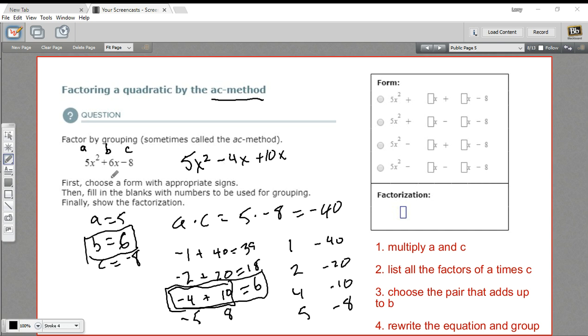And negative 4X plus 10X is 6X. So this is legal. This is allowed. So this equation right here is the same as this equation. It just looks slightly more complicated.